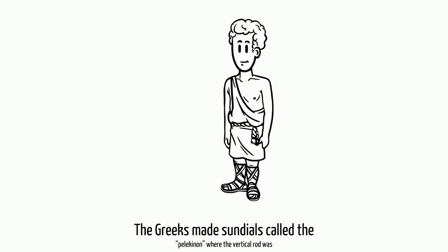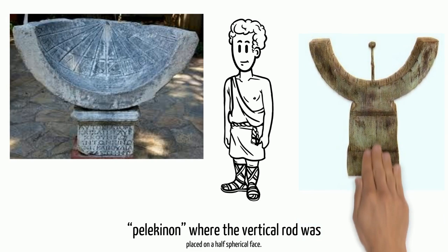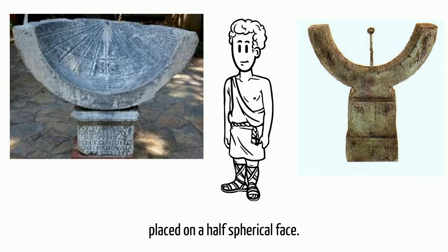The Greeks made sundials called the pelicanon, where the vertical rod was placed on a half spherical face.